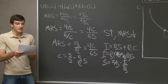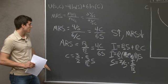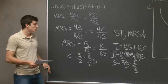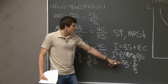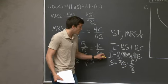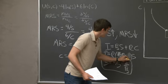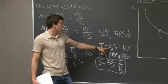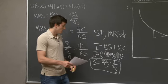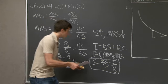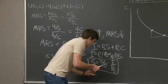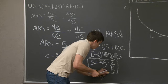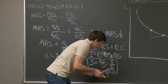We can go through the same process to find the demand function for clothing. We take the S we just solved for, plug it back into the income function, and solve for C. We find that the demand function for clothing equals three-fifths times income over PC.